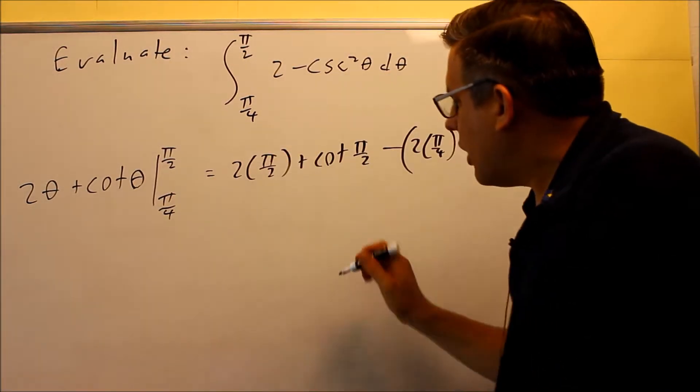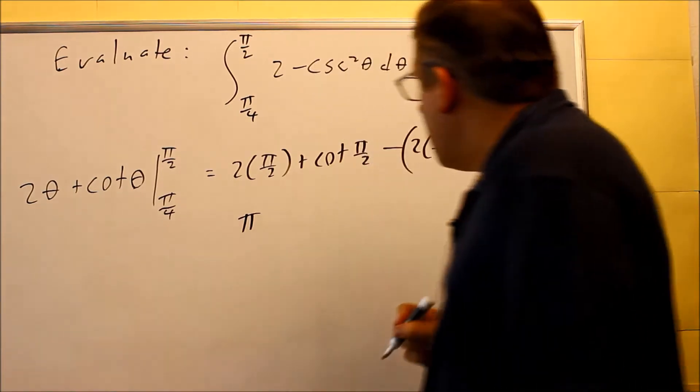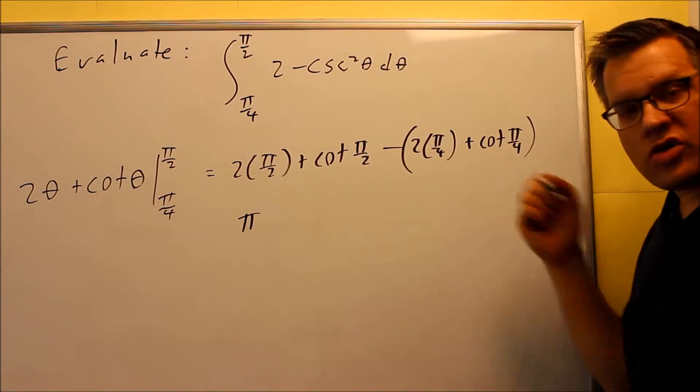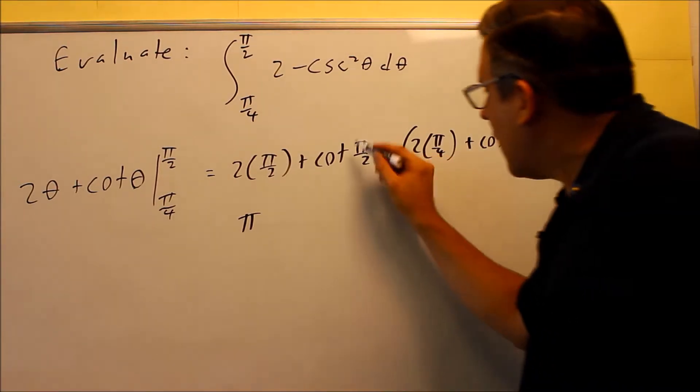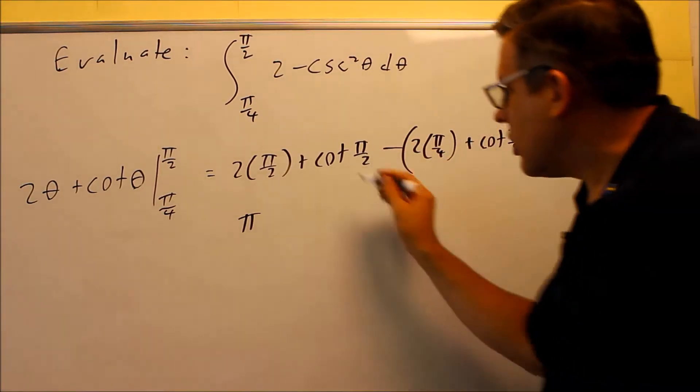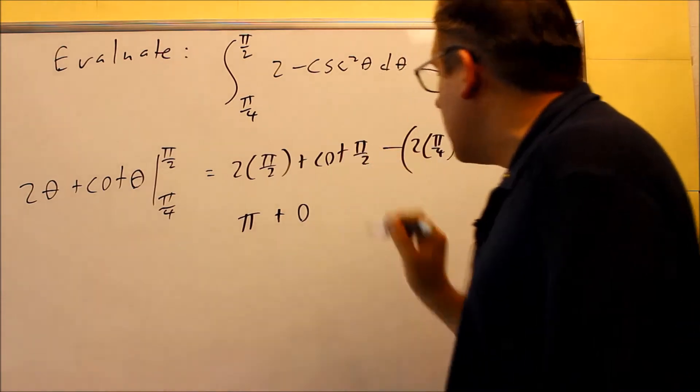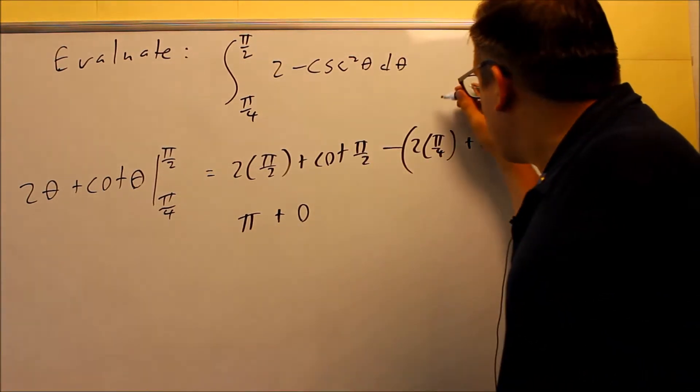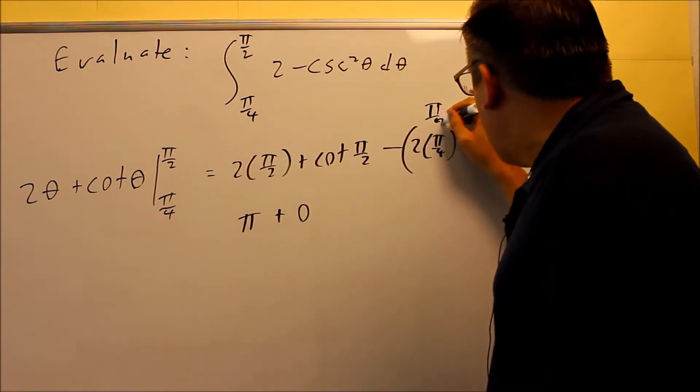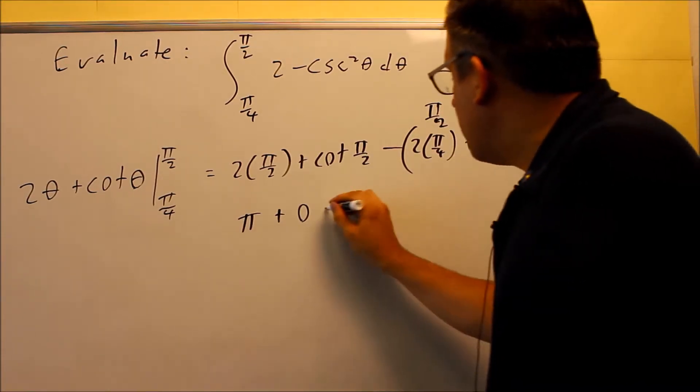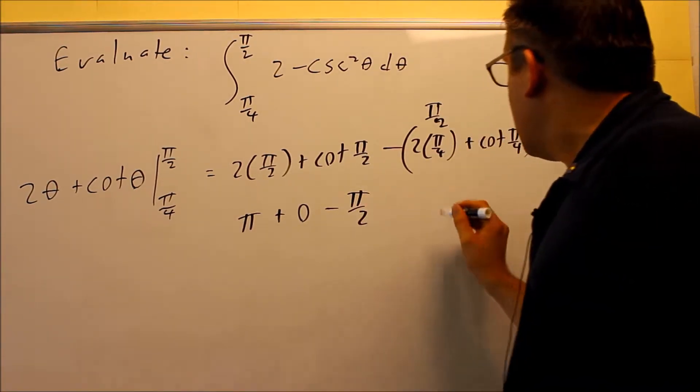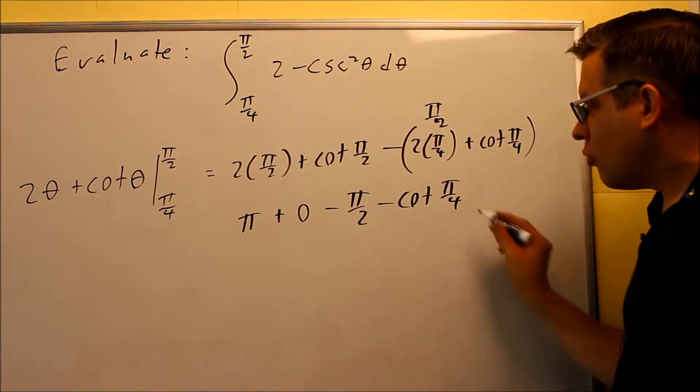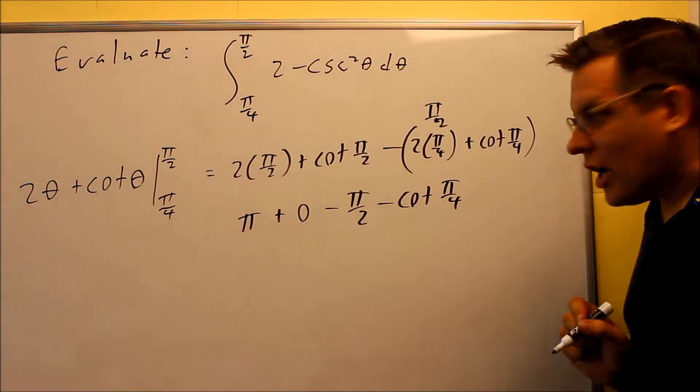And now we're just going to work this out. The 2's are going to cancel. You get a π. Cotangent is the same thing as cosine over sine. So cosine π over 2 is 0. So that means that this whole thing is going to end up being a 0 there. Inside the parentheses, this part's going to be π over 2. So we're going to do minus π over 2. And then minus cotangent π over 4.